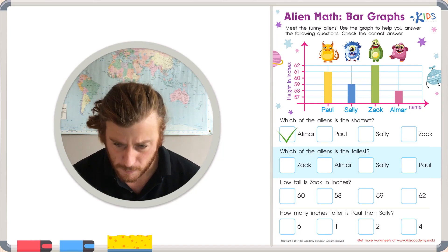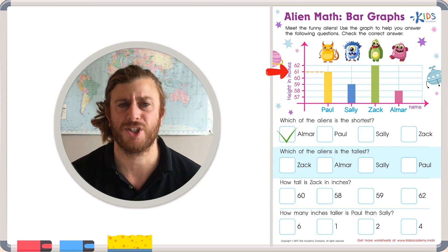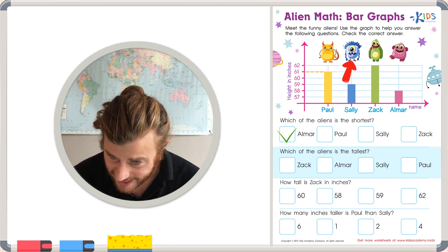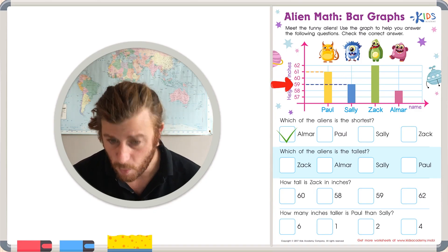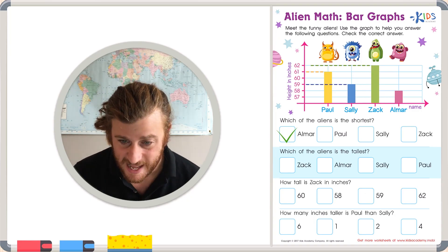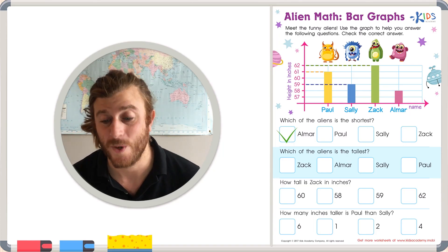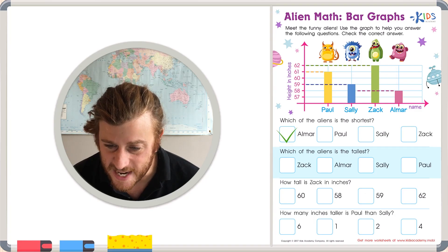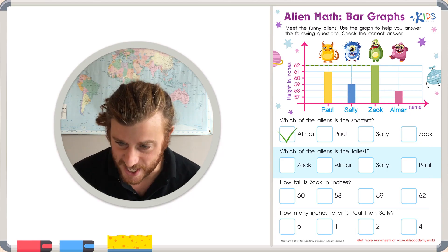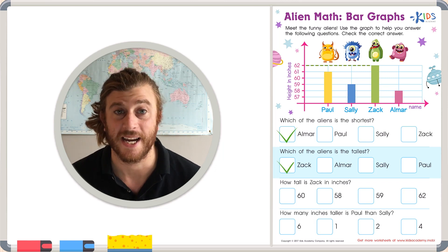Just by looking at the graph you can easily tell that Omar is our shortest alien at 58 inches. Let's check the box for Omar. Our next question asks which alien is the tallest. Paul is 61 inches, Sally is only 59, so Paul is taller than Sally. But Zach is all the way at the top at 62 inches. And Omar is only 58. So Zach is clearly the tallest.